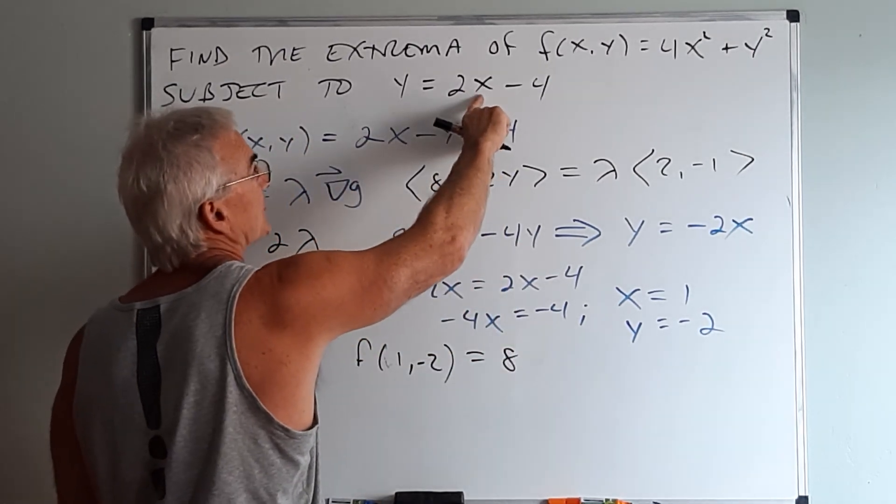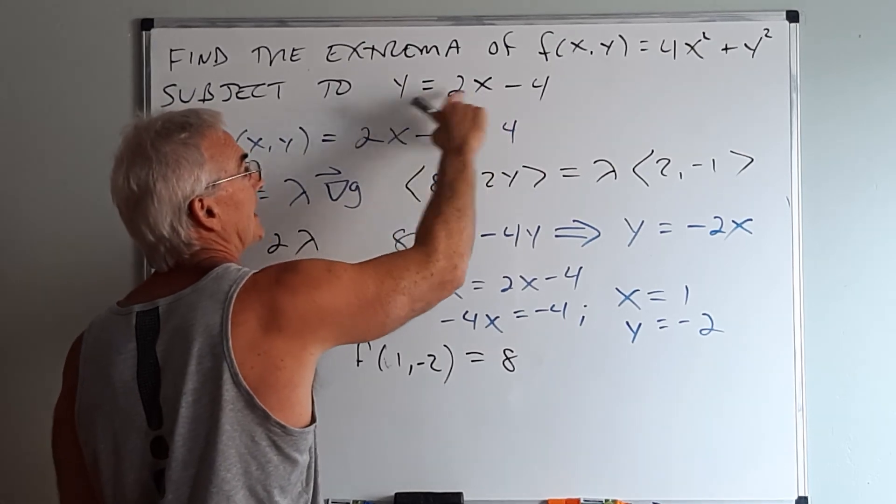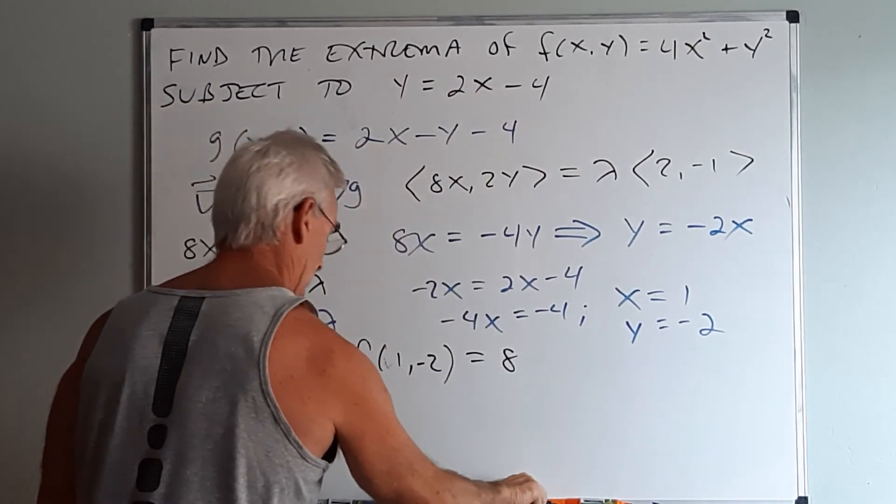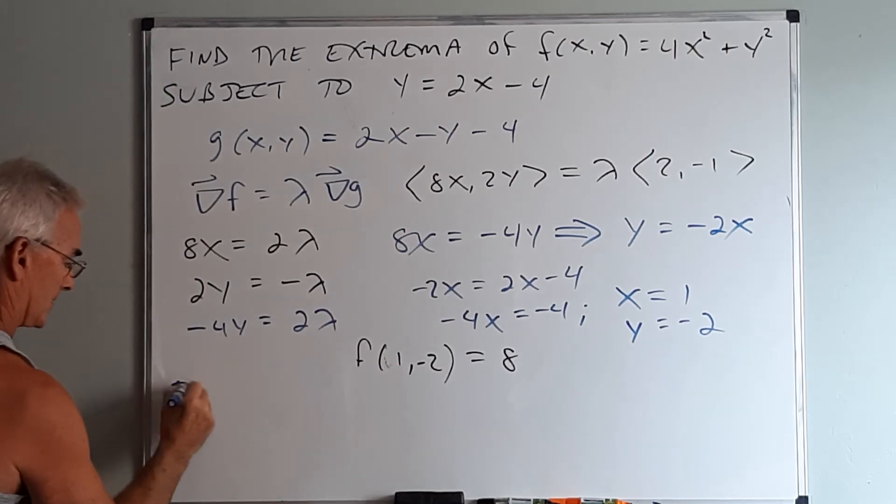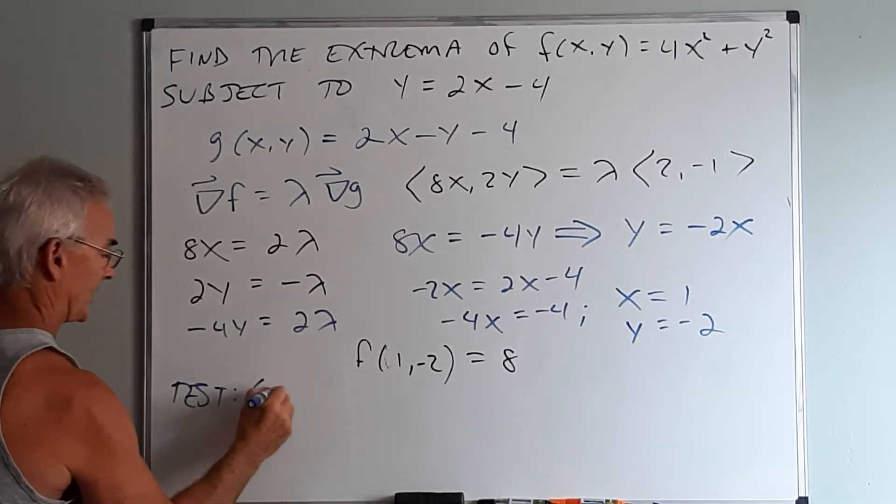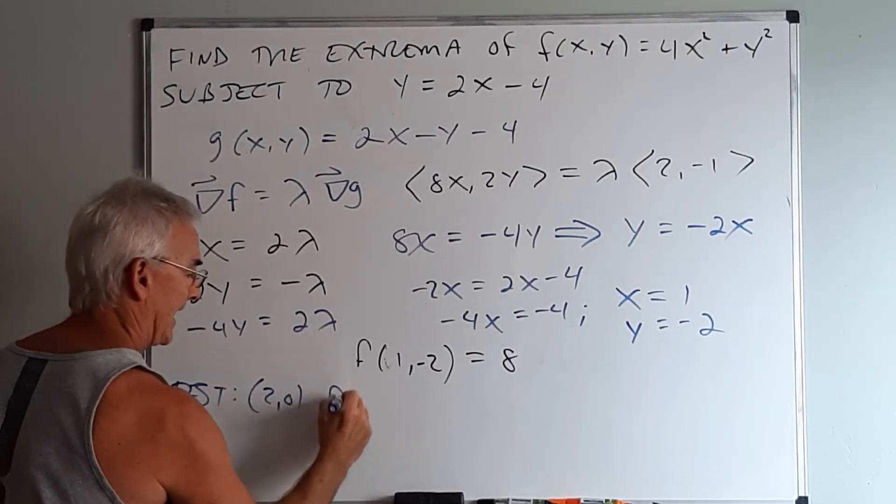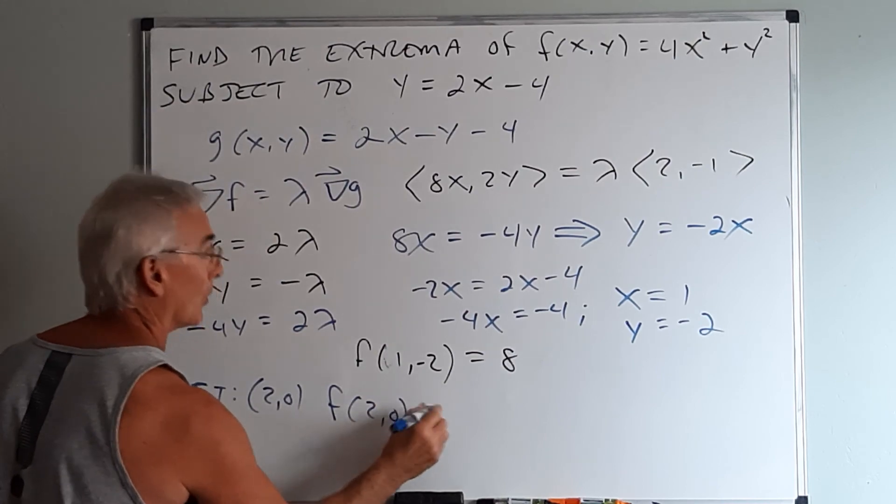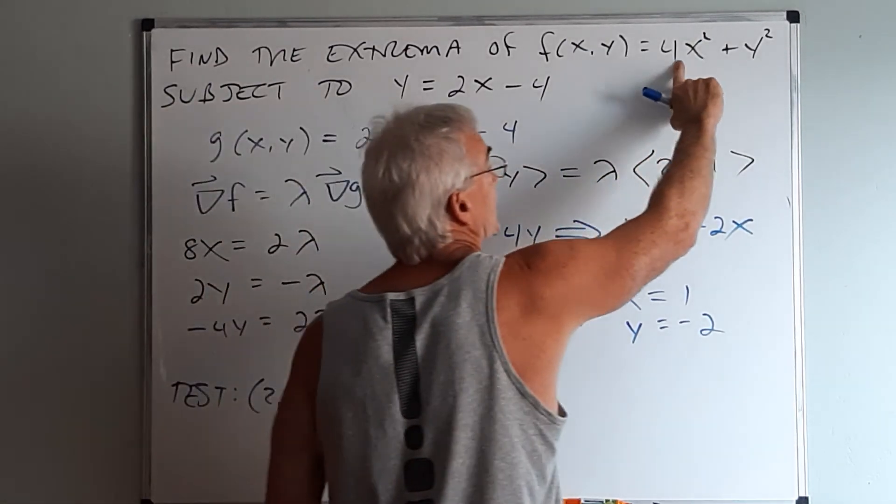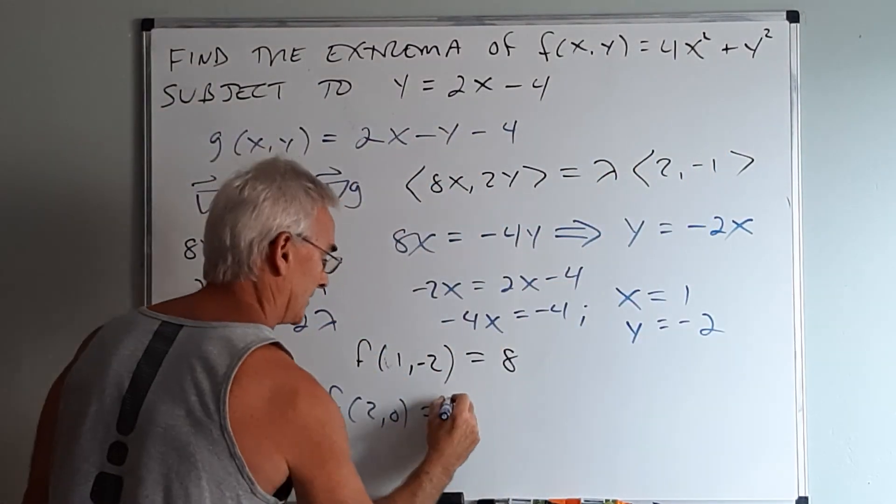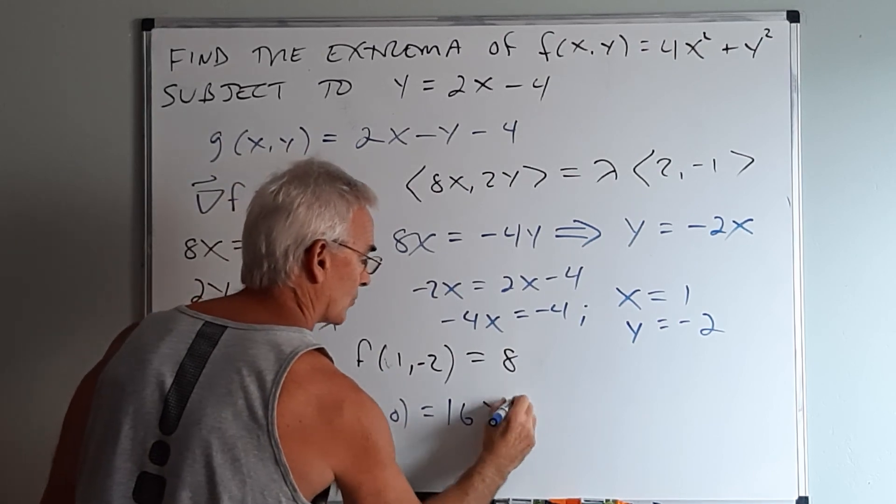For example, I can see that the point 2 comma 0 is on the constraint. So we will test the point 2 comma 0. f of 2 comma 0 is 4 times 2 squared, or 16. 16 is greater than 8.